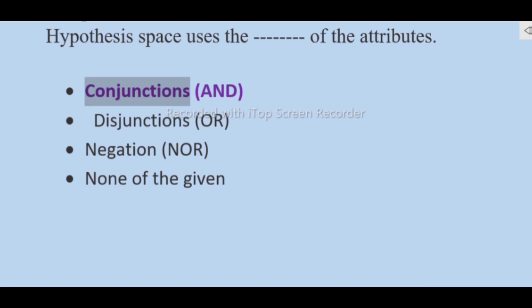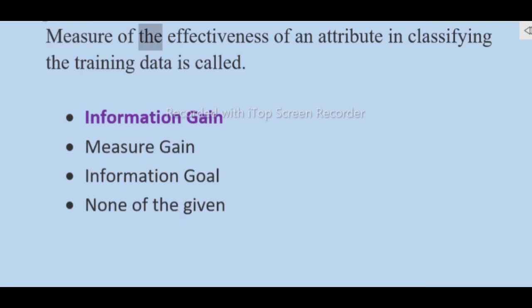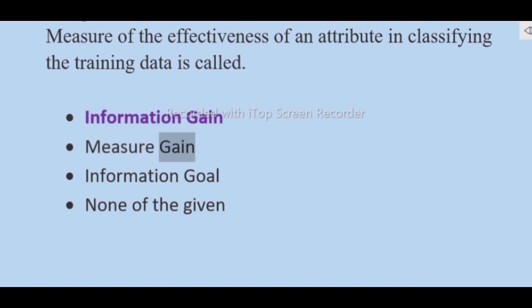The hypothesis space uses conjunctions (AND) of attributes — not disjunctions (OR), negation, NOR, or none of the given. The measure of the effectiveness of an attribute in classifying the training data is called information gain measure.